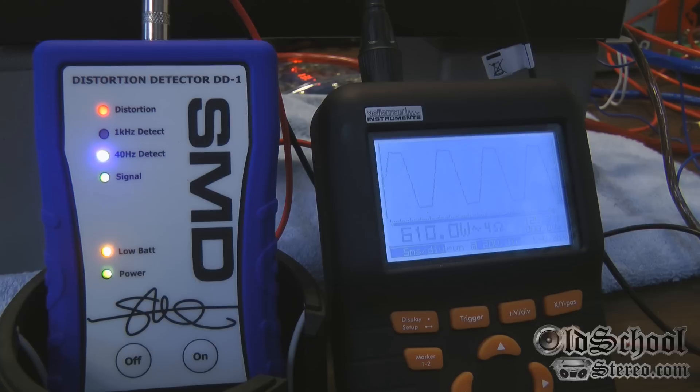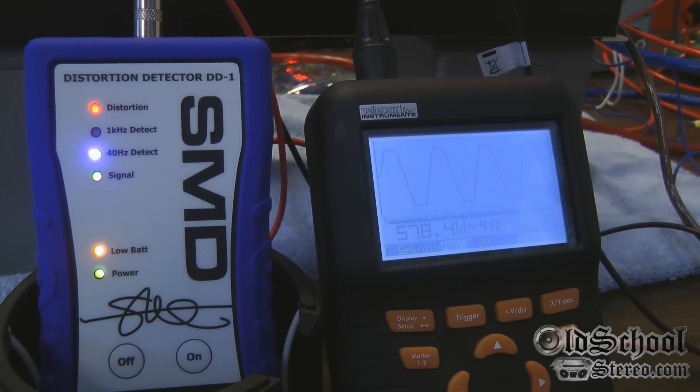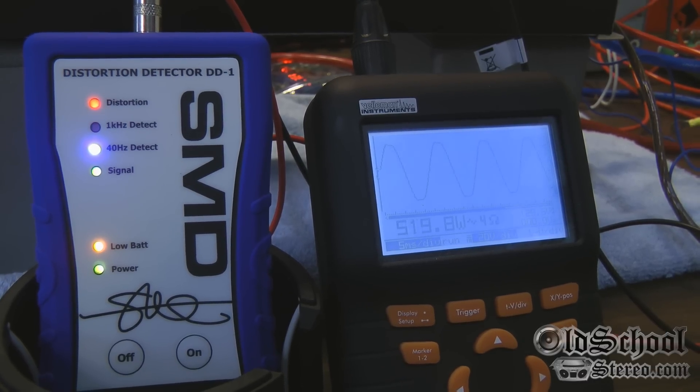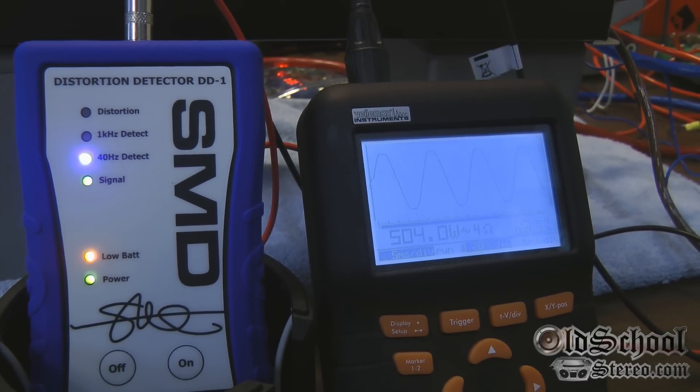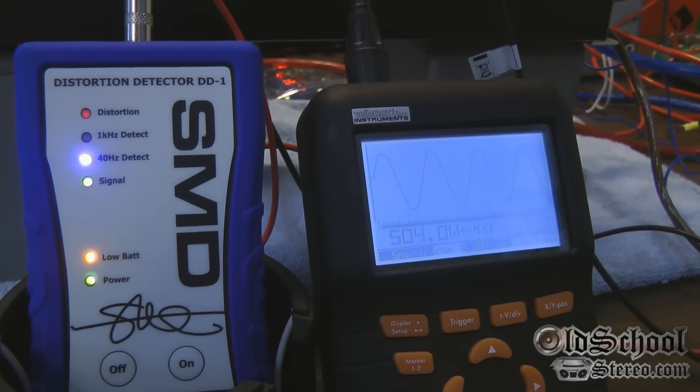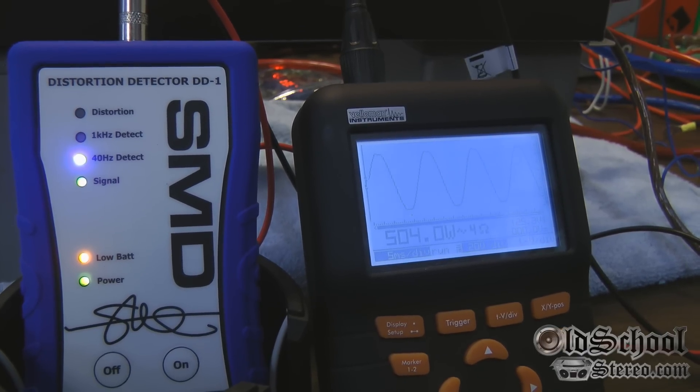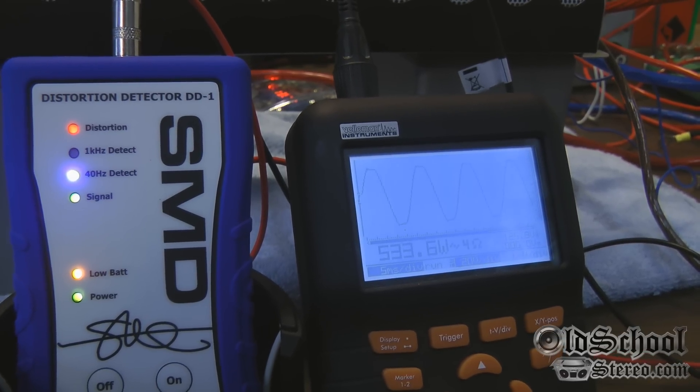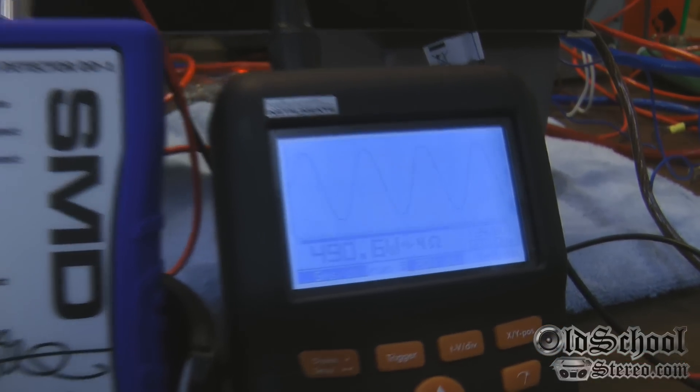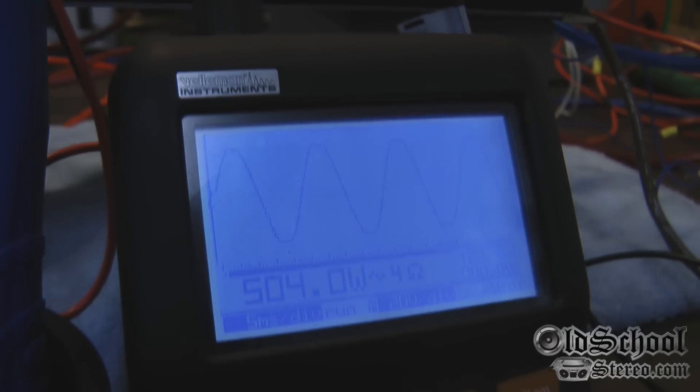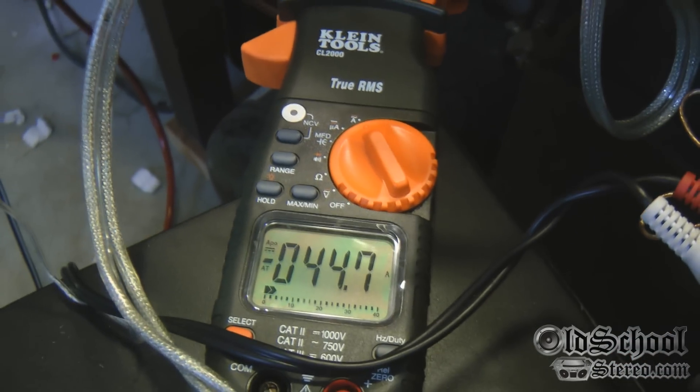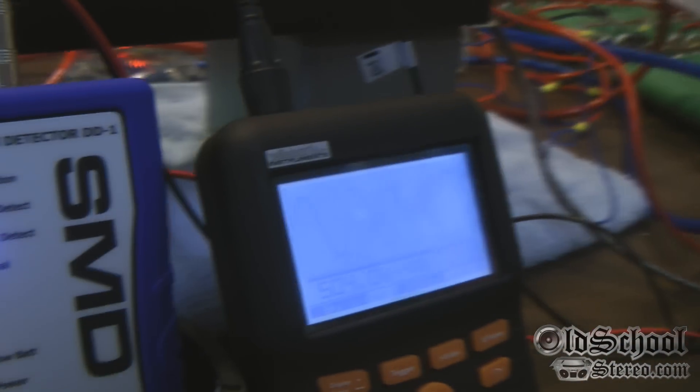Alright, we have distortion at 610 watts, pretty hard. Let's back it down a little bit. Looks like 504 watts. The waveform still looks clipped to me but the DD1 says we don't have distortion, so we're going to go with the DD1 because the scope's resolution is not that great. So 504 watts, and just out of curiosity let's see how many amps we're pulling - 44.7 amps of current. That's pretty good.